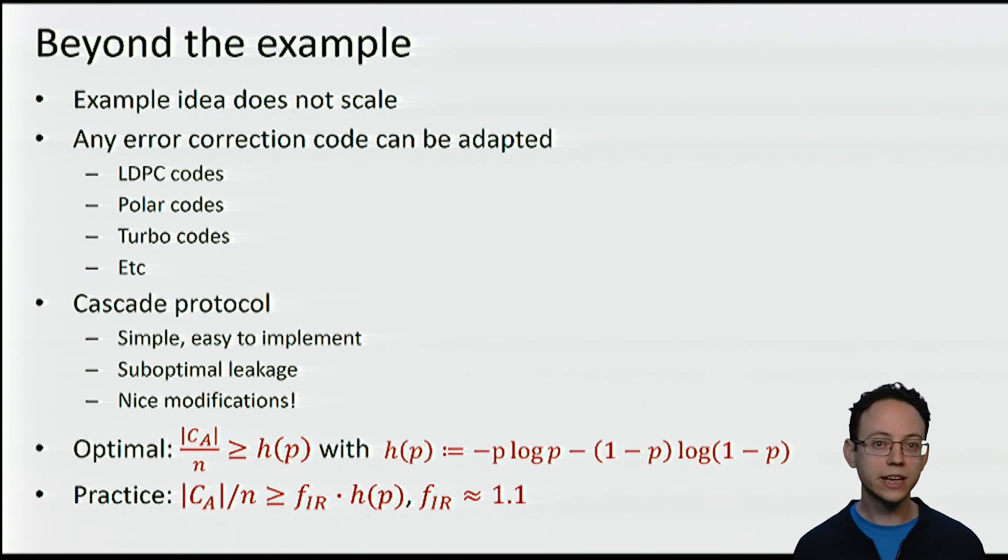Second, previous to this idea of using linear error correcting codes, there was some other two-way protocol proposed especially for information reconciliation. If you had read about QKD in the past, probably you have already encountered this protocol. Its name is Cascade. It has a reasonably simple description and it is not very difficult to implement. However, the original version was sub-optimal from the point of view of leakage. Fortunately, there are some nice modifications that make it competitive with the error correction codes based reconciliation.